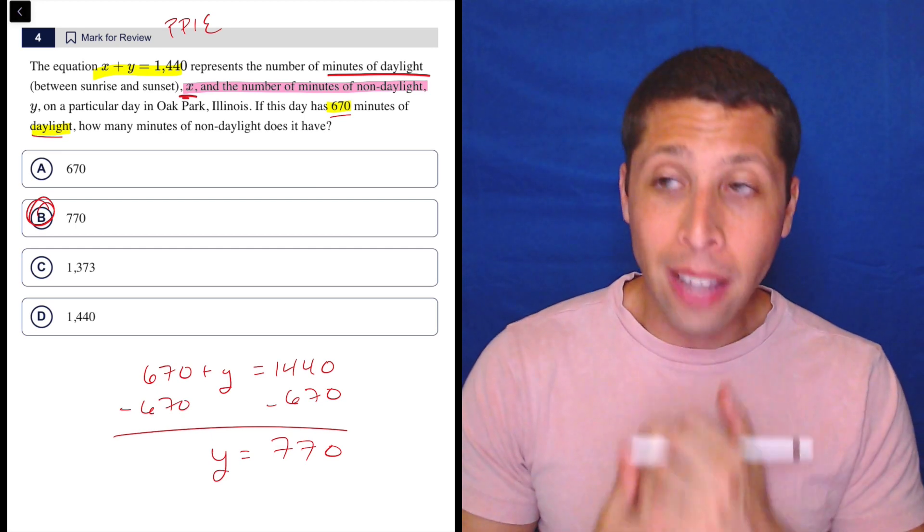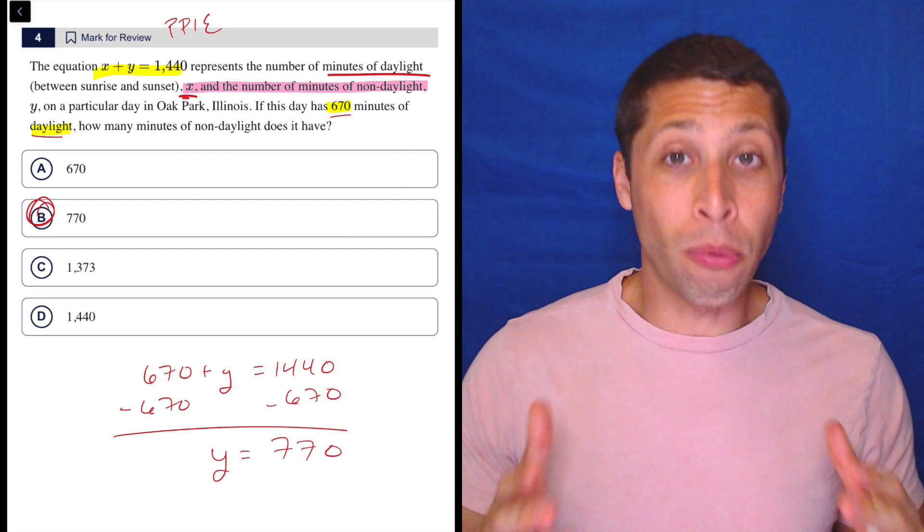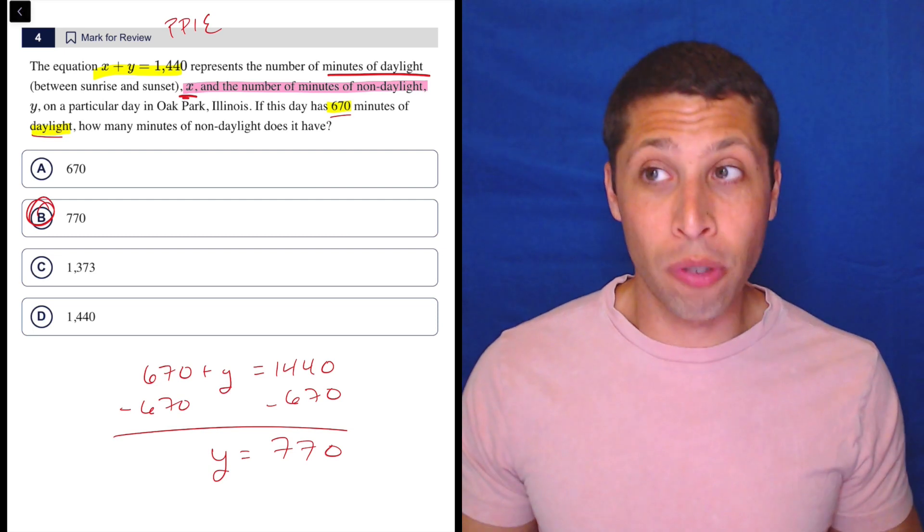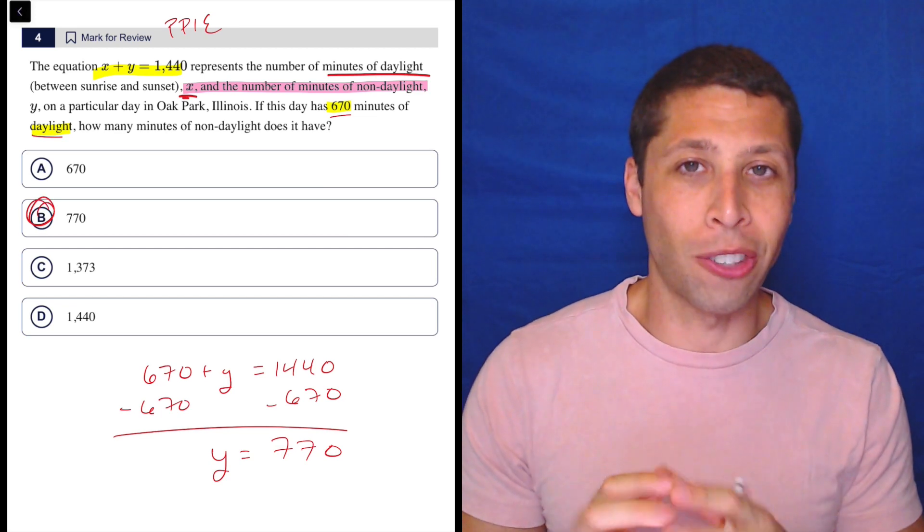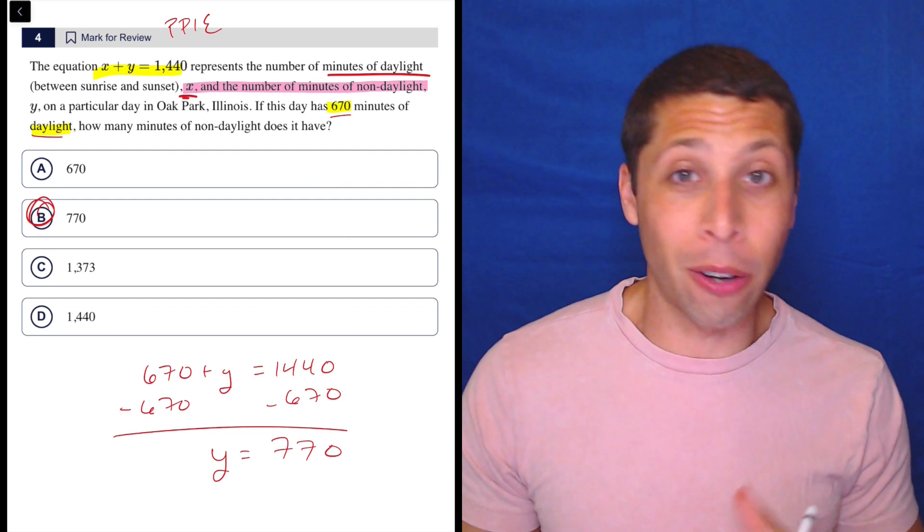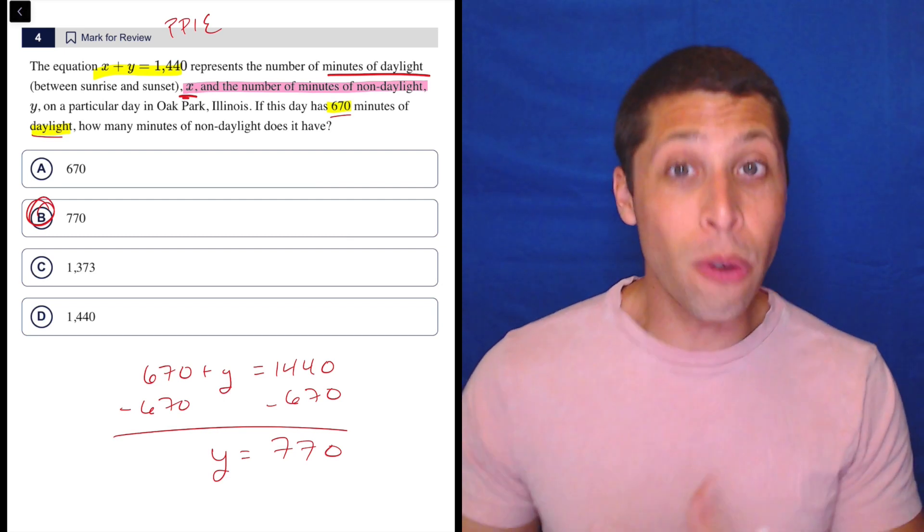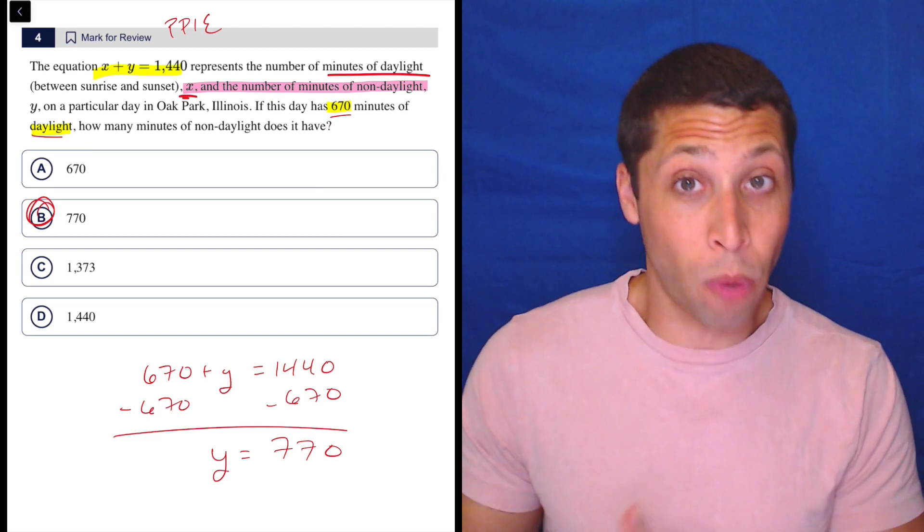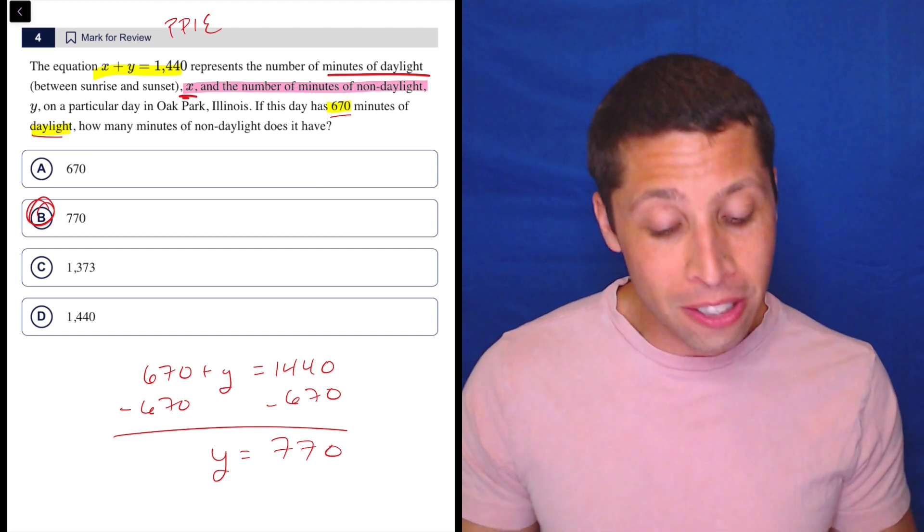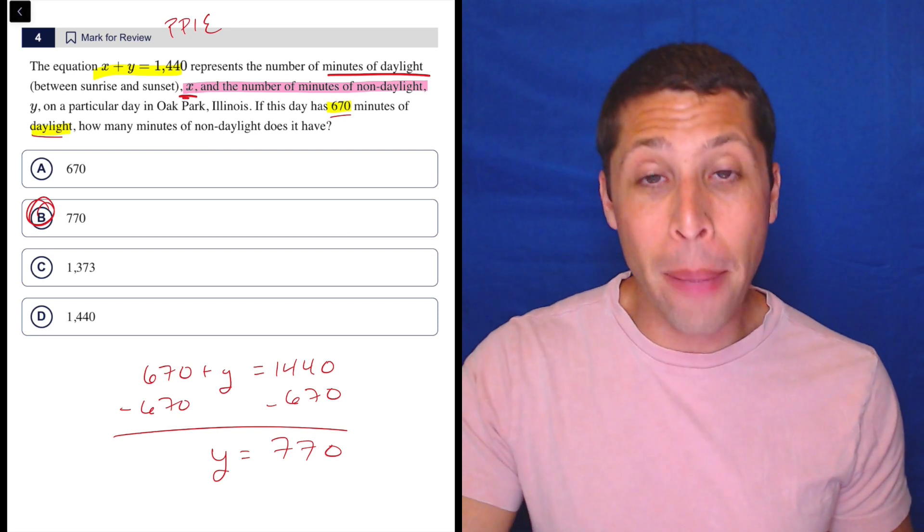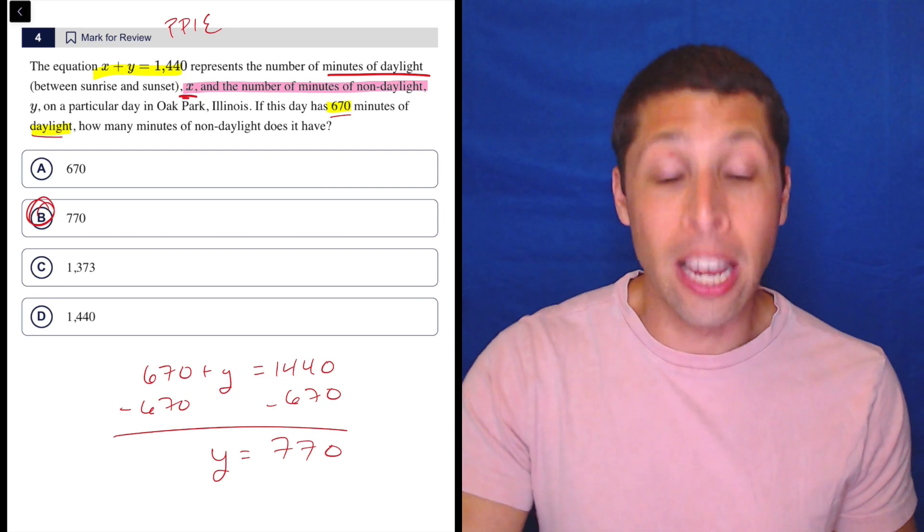So just remember, a lot of questions in the SAT, for the math especially, are not really about math. They are about reading instructions and following those instructions. But the SAT has ways of kind of confusing those instructions and making them harder to follow. And so if you're going too fast, you're not paying attention, you're going to fall for these traps, and those answer choices that you would get, those wrong answers will be there as choices. So just be aware of this. I know this is an easy question, but I cannot stress enough how many points people lose unnecessarily because of reading stuff like that incorrectly on harder questions.